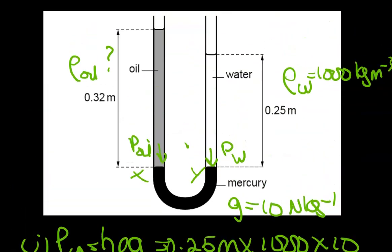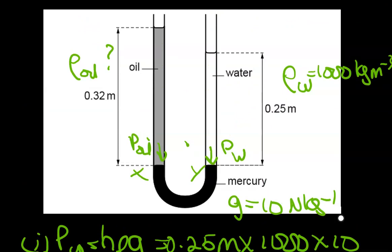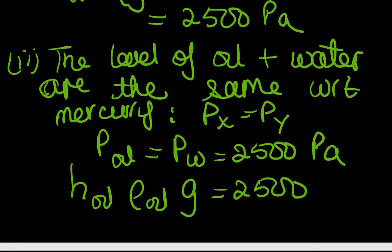If the question asks you to determine the pressure of oil, you will be assuming that the pressure at X and the pressure at Y, that level, is the same. The pressure due to the water which was just calculated to be 2500 Pascals is the same as the pressure due to the column of oil, so that would have been ρgh. You would have had 0.32 by the density of oil by g being equal to 2500.